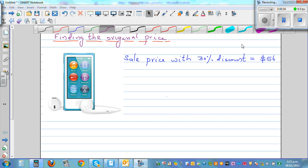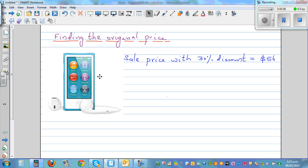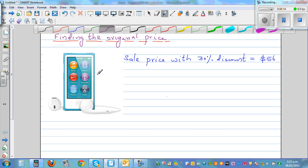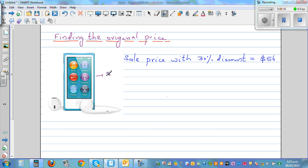We want to find the original price of this iPod. What does it say? The sale price with a 30% discount is $56. So this iPod is selling at $56, and we're told there is a 30% discount on it. We want to find the original price.